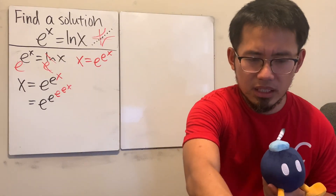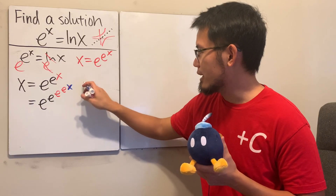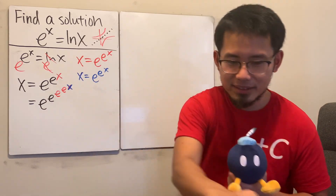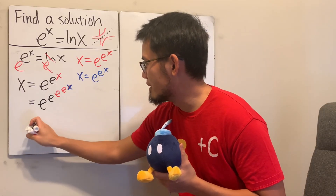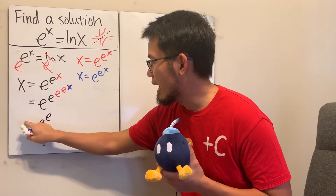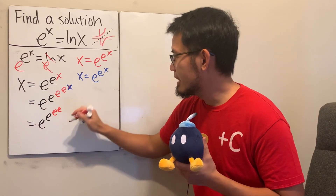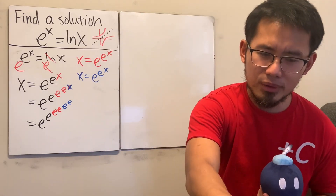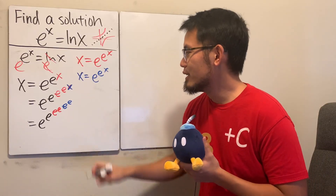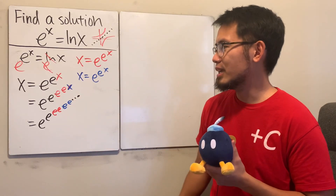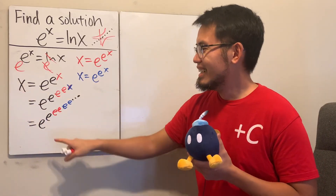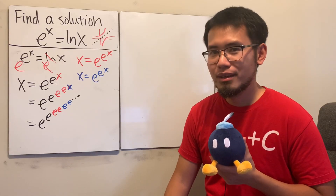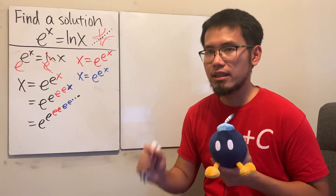This procedure can keep on going forever, so you can put dot, dot, dot. In other words, x becomes just e to the e to the e to the e to the e, infinitely many e's. The truth is that this infinite tower does not converge, so you have to pay attention to whether it converges or not.